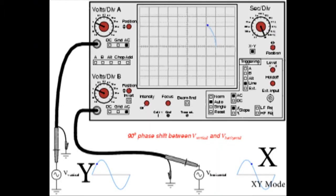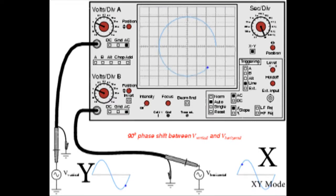The following animation should give you a good idea of how XY mode creates a plot. Watch where the dots are on the sinusoids, and notice how they are plotted on the XY plane.